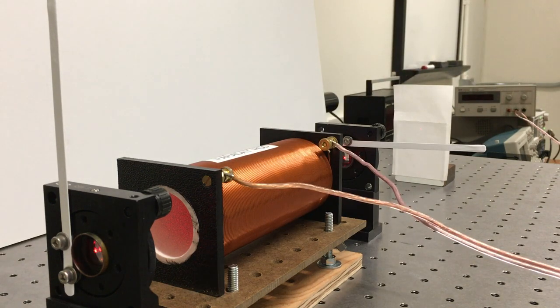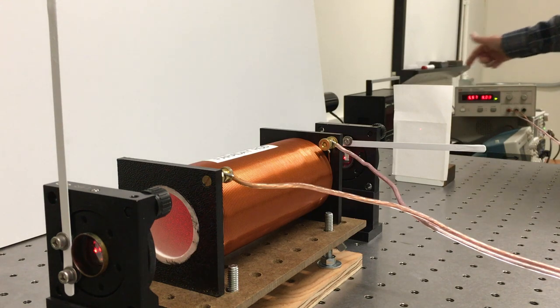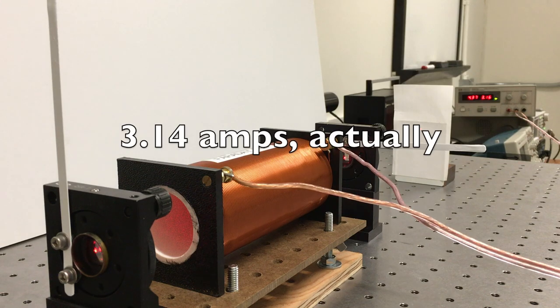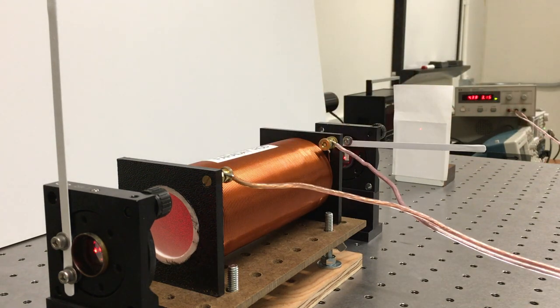So over here there's a power supply and basically I'm just going to turn it on and you can see we're now running about 3.1 amperes through the coil. So there's a magnetic field in there and you can see our spot has got a little bit brighter now.